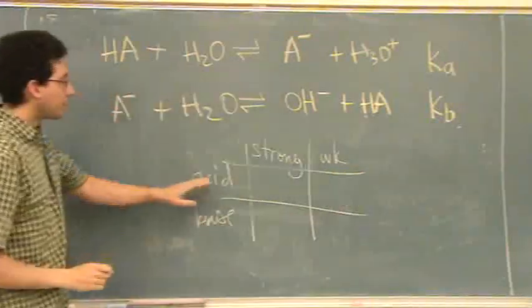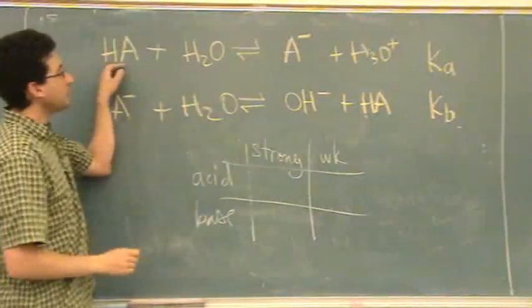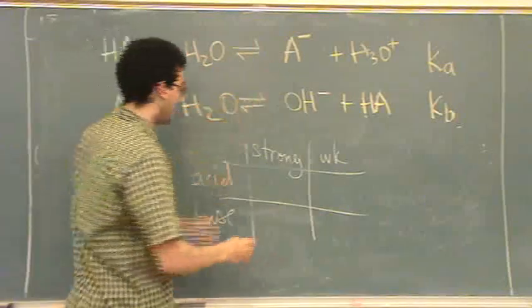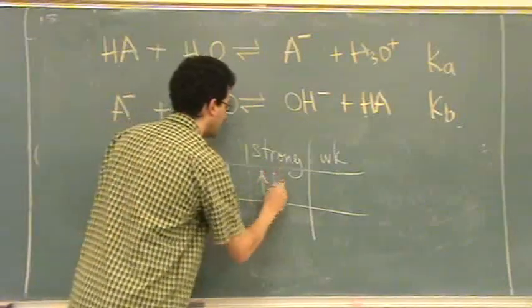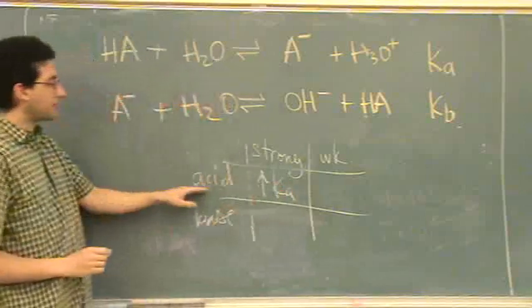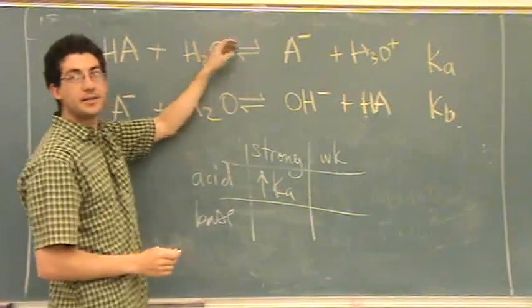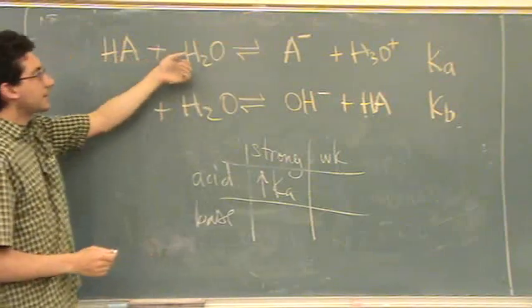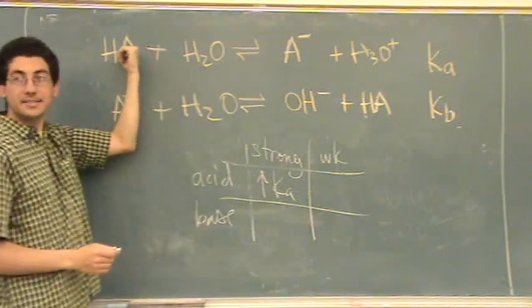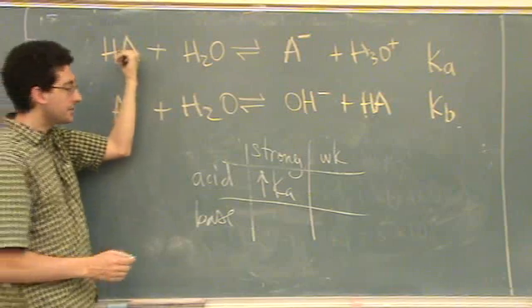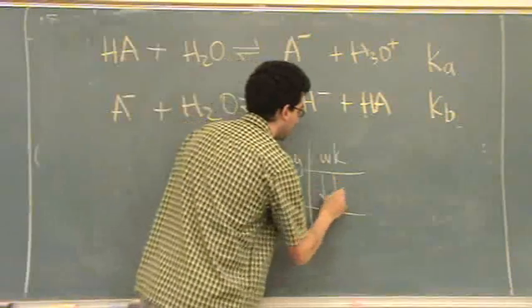So for a strong acid, that means it donates protons a lot, that means KA has to be large. So, large KA. For a weak acid, that means it's not going forward very much. It's not donating a lot, so actually K equilibrium lies on the left-hand side. The reactants are favored. Or, you have a small KA.